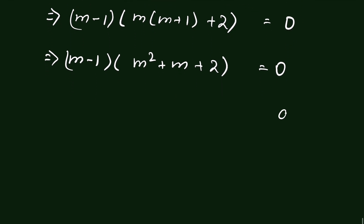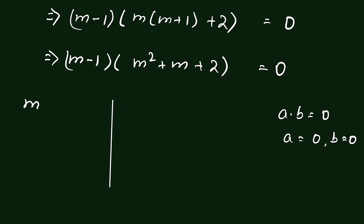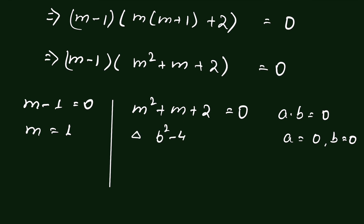Now when a times b is equal to 0, then either a is equal to 0 or b is equal to 0. That means when m minus 1 is equal to 0, m is equal to 1. When m squared plus m plus 2 is equal to 0, we check this quadratic equation — we can find whether we have a real solution or not if the discriminant b squared minus 4ac is greater than or equal to 0.